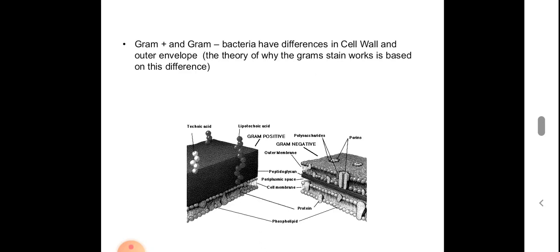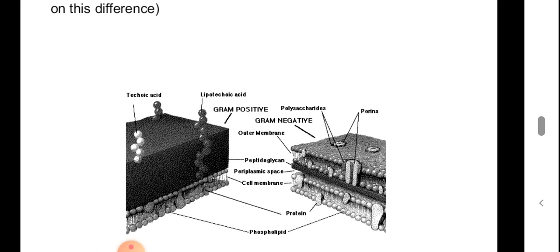This picture shows the differences between the gram-positive and gram-negative envelope. You can also see the difference between their cell walls: in gram-positive it is very thick, and in gram-negative it is very thin.